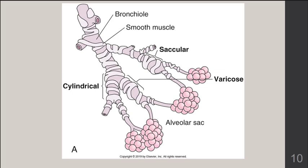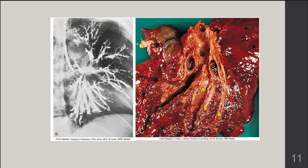The mucus buildup in bronchiectasis can lead to infection in the lower airways, potentially requiring antibiotics if bacterial. One presentation is foul-smelling sputum with a cough. Bronchography images show how bronchiectasis looks — the lower segment is affected, and cylindrical bronchiectasis is also visible, showing dilated bronchi and bronchioles.